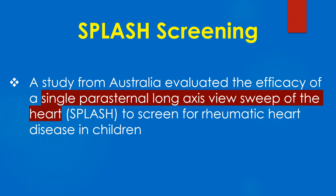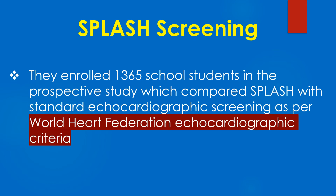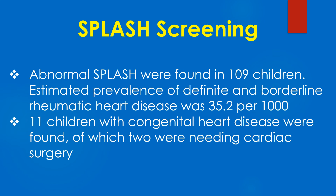A study from Australia evaluated the efficacy of a single parasternal long axis view sweep of the heart — or 'splash' — to screen for rheumatic heart disease in children. They enrolled 1,365 school students in a prospective study comparing splash with standard echocardiographic screening as per World Heart Federation echocardiographic criteria. Abnormal splash findings were found in 109 children. The estimated prevalence of definite and borderline rheumatic heart disease was 35.2 per thousand. Eleven children with congenital heart disease were found, of which two were needing cardiac surgery.